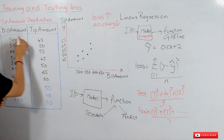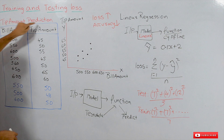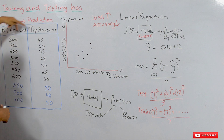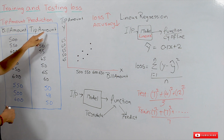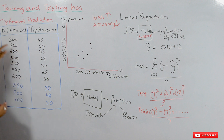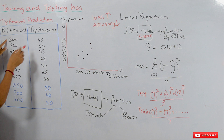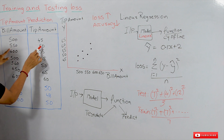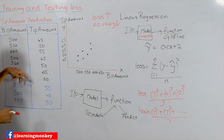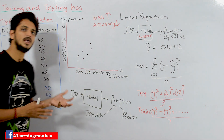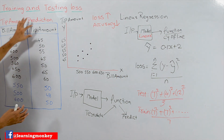The example dataset we consider here is the tip amount prediction dataset, which we've been using from the beginning of the classes. We have two columns: bill amount and tip amount. Based on the bill amount, we have to predict the tip amount. The data collected is from 10 customers — for example, one customer made a bill amount of 500 and gave a tip amount of 45, another customer 550 with a tip of 50, and so on. Usually the data will be in lakhs, but for understanding we are taking only 10 data points.